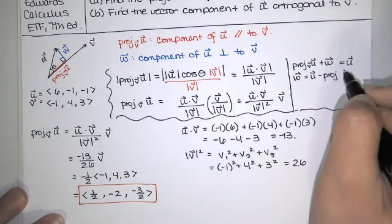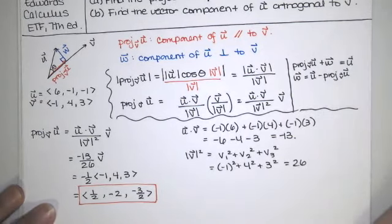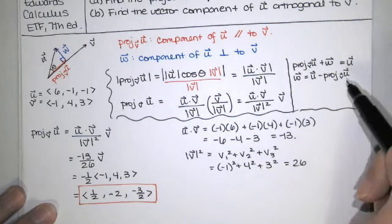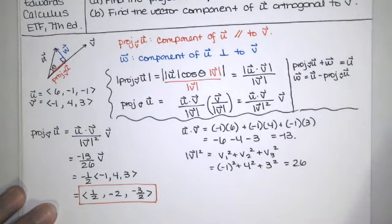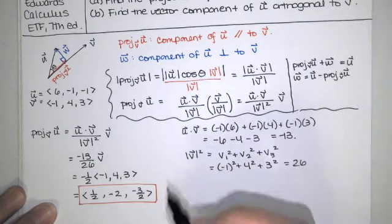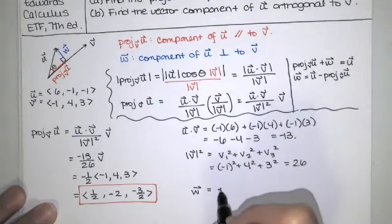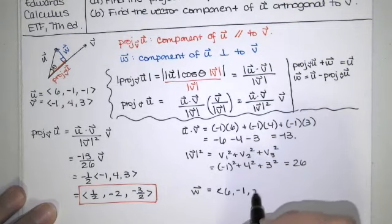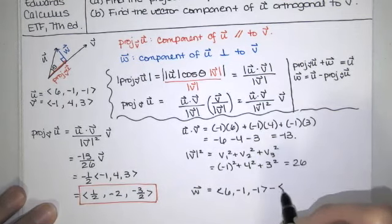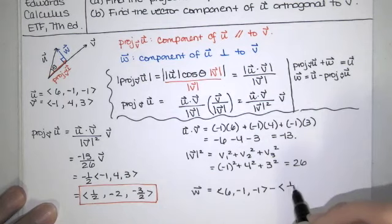And of course, you don't have to memorize any of these derivations, although I think learning them makes it much more meaningful when you're actually doing this stuff. You can just have this written on your formula sheet, and that would work just fine as well. So w is equal to u, which is a vector with components 6, -1, and -1, and then we're subtracting this vector here.